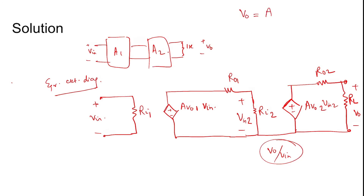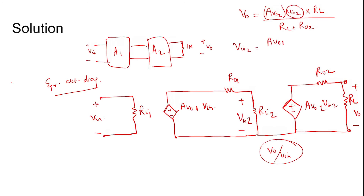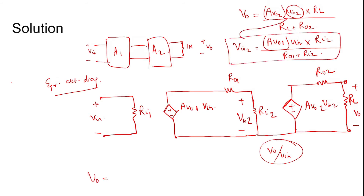Vout can be determined by the voltage division rule as: Vout = Av02 × Vin2 × RL / (RL + Ro2). The value of Vin2 can again be written using voltage division as: Vin2 = Av01 × Vin × Ri2 / (Ro1 + Ri2).